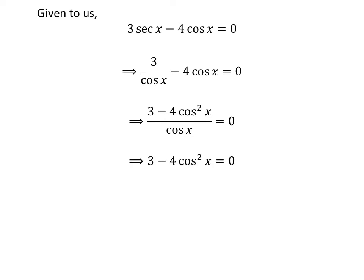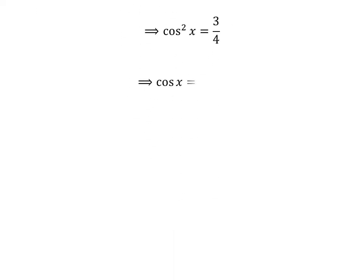Multiplying the whole expression by cosine of x gives us 3 minus 4 times square of cosine of x is equal to 0. Taking 3 to the right-hand side and multiplying by minus 1 gives us 4 times square of cosine of x is equal to 3. Dividing by 4 gives us square of cosine of x is equal to 3 upon 4. Taking the square root of both sides, we get cosine of x is equal to plus or minus square root of 3 upon 2.